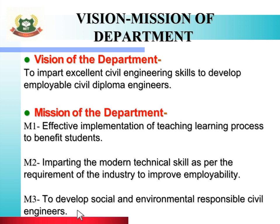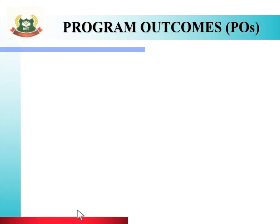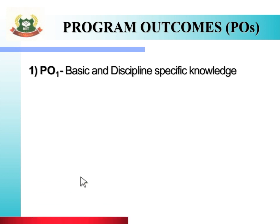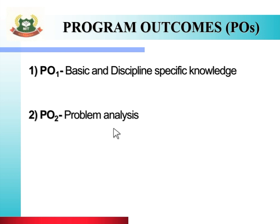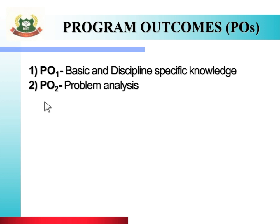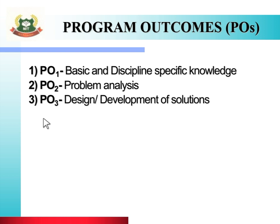To achieve this vision and mission, there are seven program outcomes. PO one is basic and discipline specific knowledge. PO two is problem analysis. PO three is design and development of solutions.